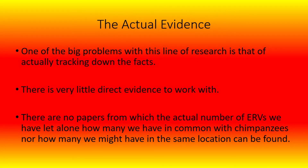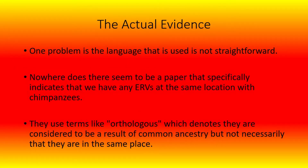One of the big problems with this line of research is that of actually tracking down the facts. There is surprisingly very little direct evidence to work with. There are no papers from which the actual number of ERVs we have, let alone how many we have in common with chimpanzees, nor how many we might have in the same location can be found. One problem is that the language that is used is not straightforward.